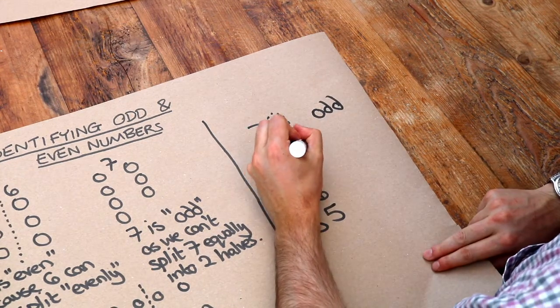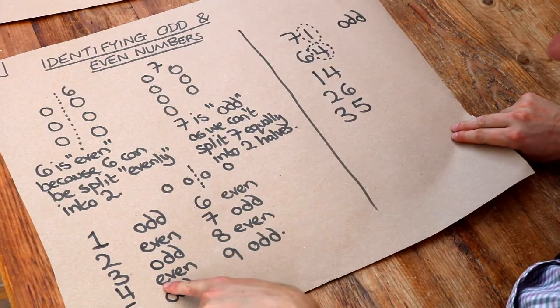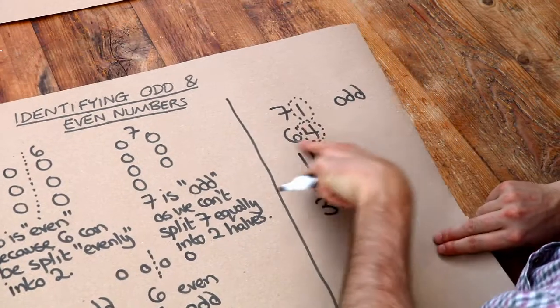Again, let's look at the last digit. Now the last digit is 4. 4 is an even number. And therefore 64 is even.